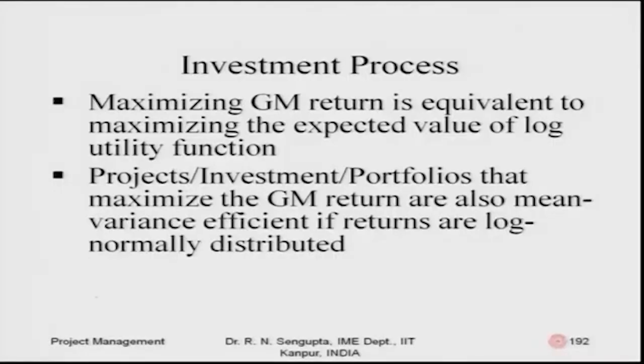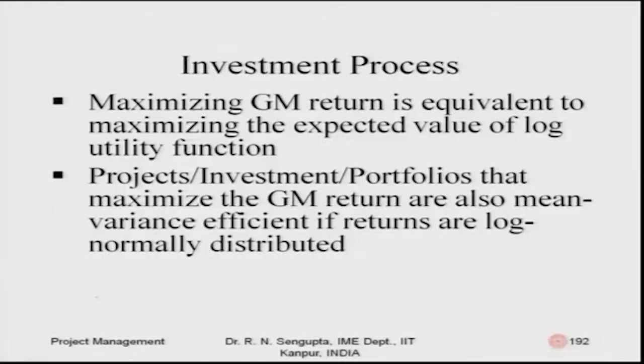As we have been continuing, we have been discussing the concept of expected value of a decision, what is a fair gamble, how people are risk averse, risk loving, risk neutral. Then we considered certainty value, then we tried to find out the utility function of a human being. Then we went into mean-variance concept, how it makes sense considering the utility function is quadratic and its relevance to normal distribution. Then we went into geometric mean concept.